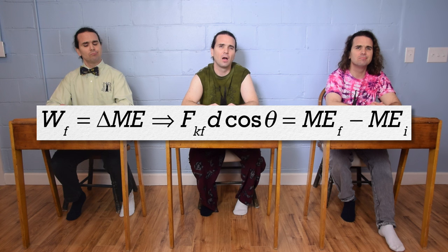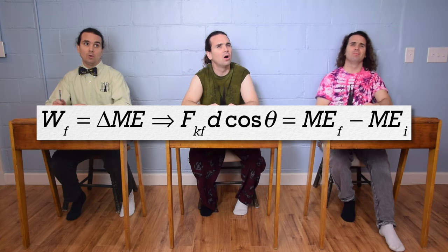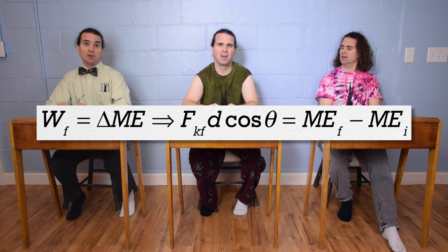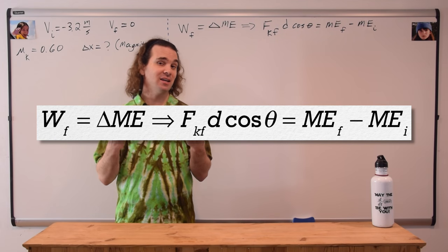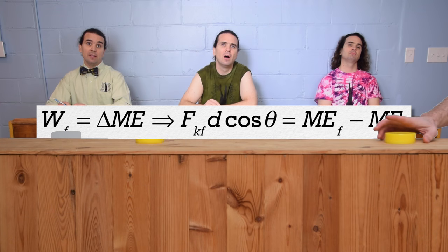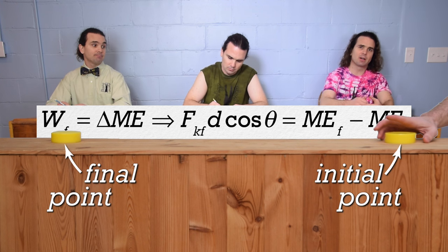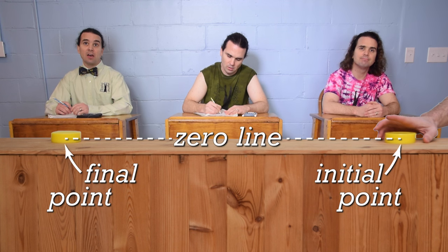Billy, before we can use this equation, what do we need to do? We need to identify the locations of the initial and final points and the horizontal zero line. Let's set the initial point where the puck leaves your hand, the final point where the puck stops, and the horizontal zero line at the height of the center of mass of the puck.